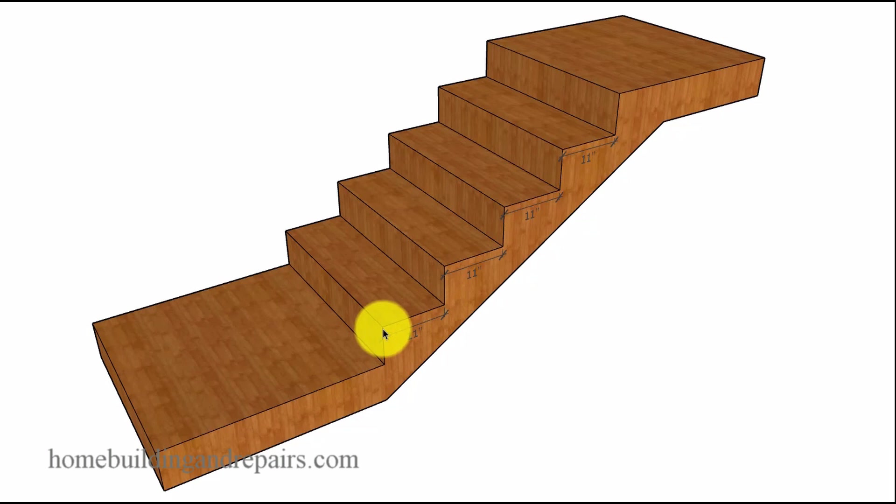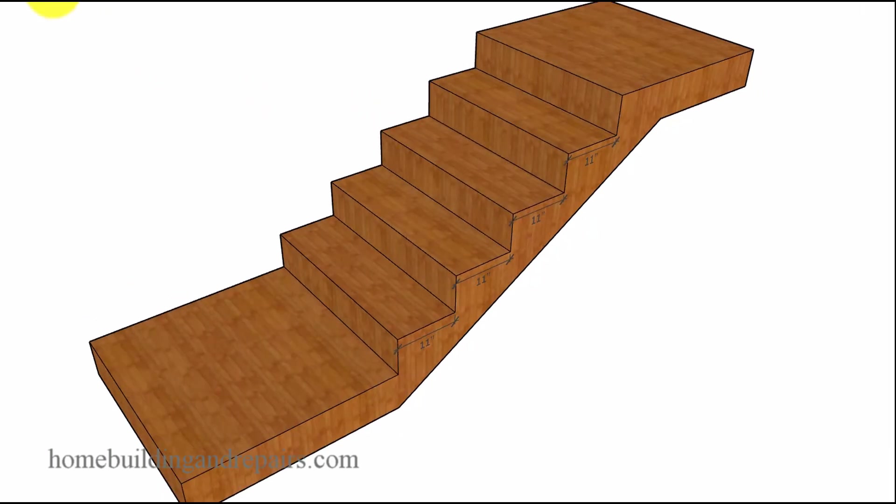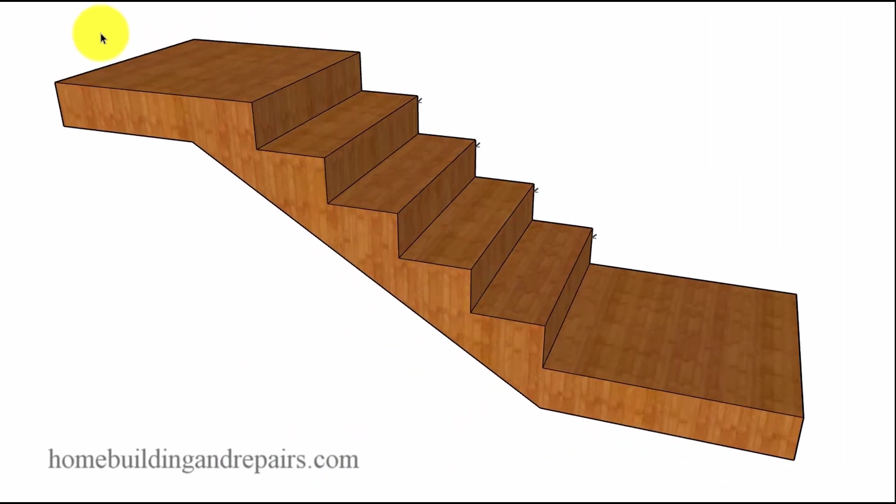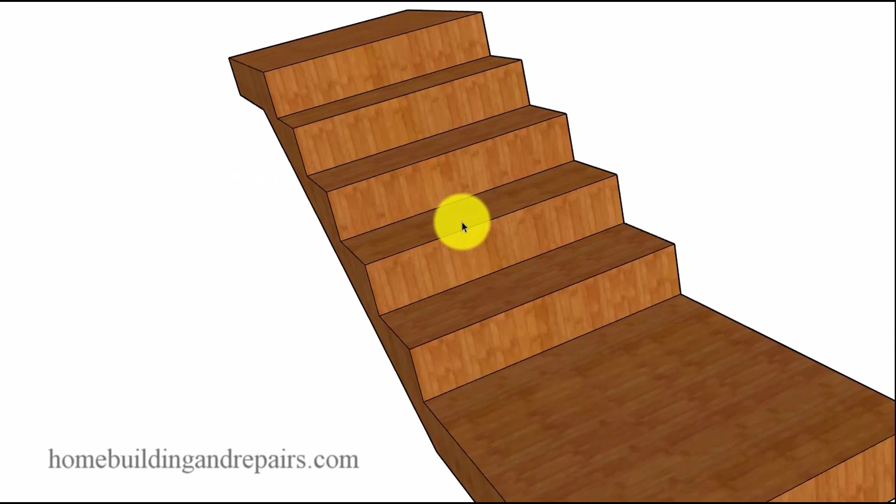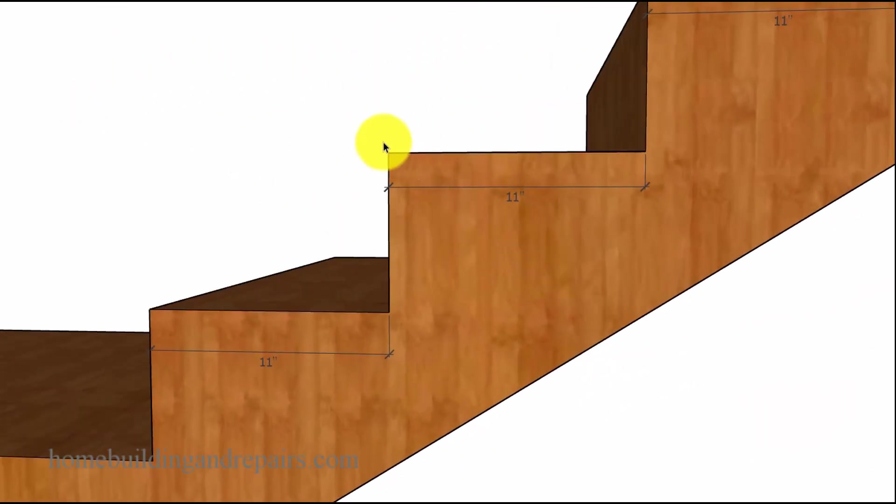So if you have a regular set of stairs with rectangular shaped treads, then each one of these measurements, your riser height, should be exactly the same. So we have 11 inch treads and we have 7 inch risers, but all of the measurements should be exactly the same.